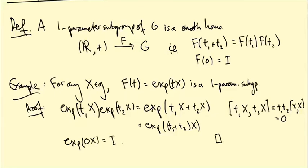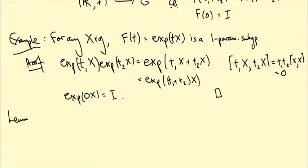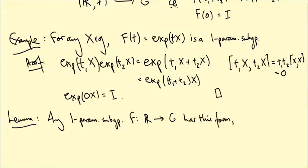So this is one way of getting one-parameter subgroups, and it turns out it's the only way. So any one-parameter subgroup F from R to G has this form, i.e. there exists an X in the Lie algebra such that F(T) equals exp(TX).